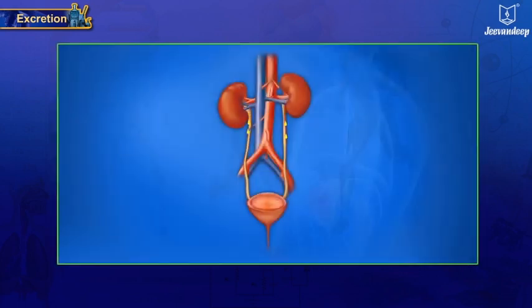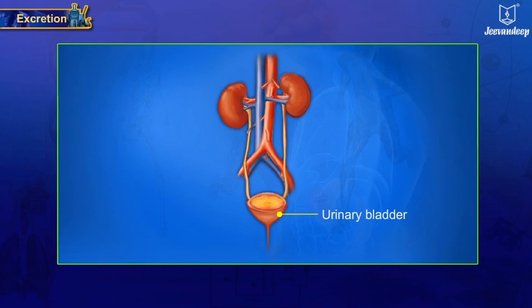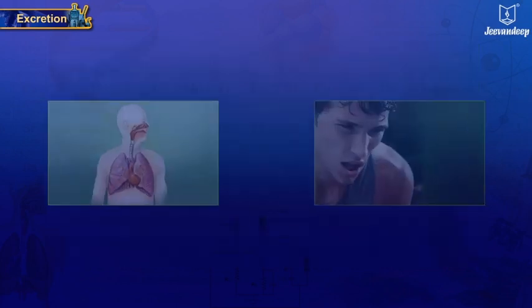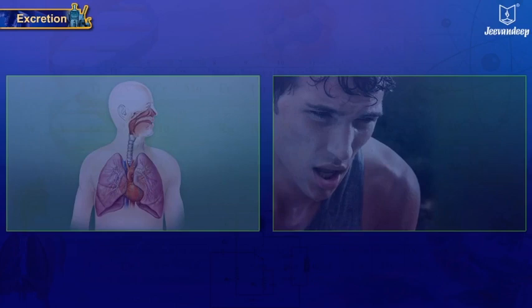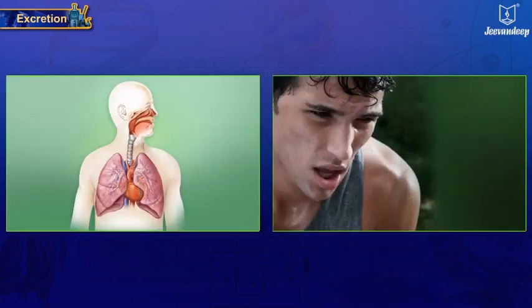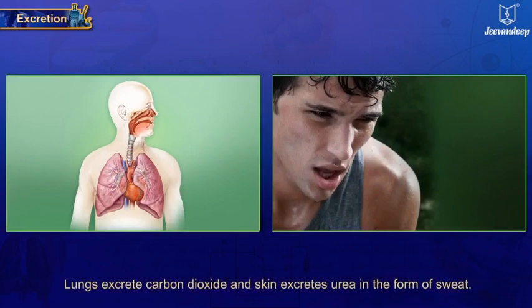The urine formed eventually enters the ureters and ultimately reaches the urinary bladder, where it is stored for some time and periodically thrown out of the body through the urethra. Besides kidneys, the lungs and the skin also help in the process of excretion. Lungs excrete carbon dioxide, and skin excretes urea in the form of sweat.